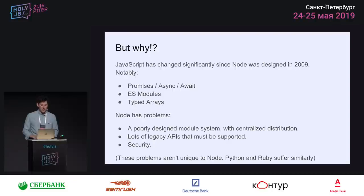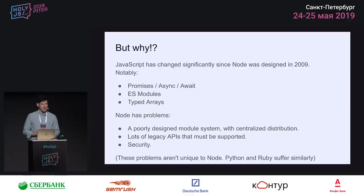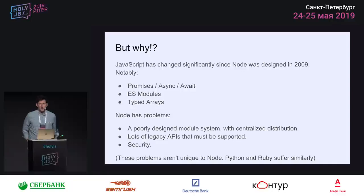The main important features that have been added are typed arrays, which give you true access to binary data — that was not around in 2009. And ES modules: the module system is now standardized. The whole require thing was just invented, and not very well. And of course the whole promise and async/await stuff is a really important feature for asynchronous I/O.